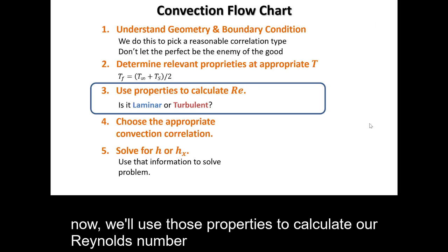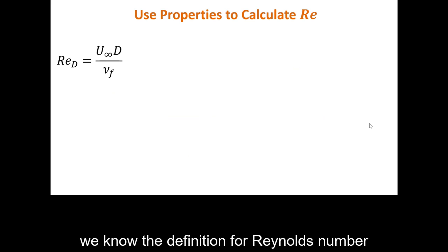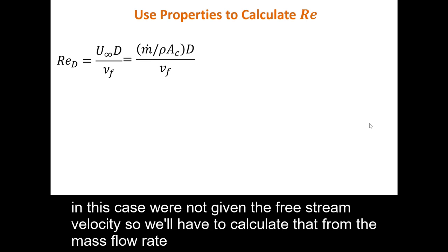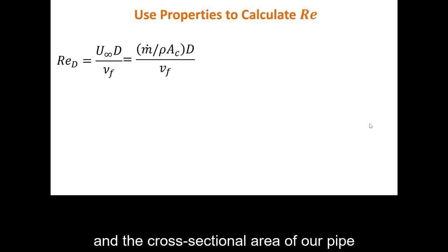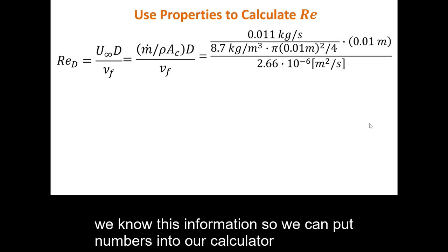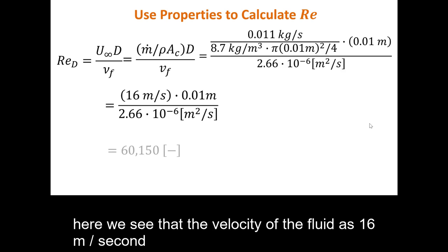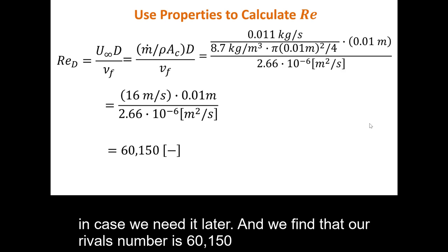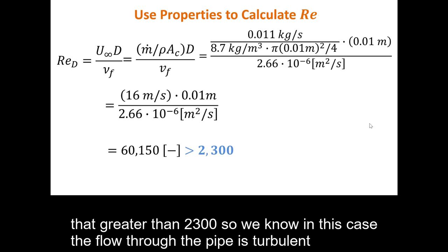Now we'll use those properties to calculate our Reynolds number. We know the definition for Reynolds number. In this case, we're not given the freestream velocity so we'll have to calculate that from the mass flow rate and the cross-sectional area of our pipe. We know all this information so we can put numbers into our calculator. Simplify it a little bit. Here we see that the velocity of the fluid is 16 meters per second, in case we need it later. And we find that our Reynolds number is 60,150. That's greater than 2,300, so we know in this case the flow through the pipe is turbulent.